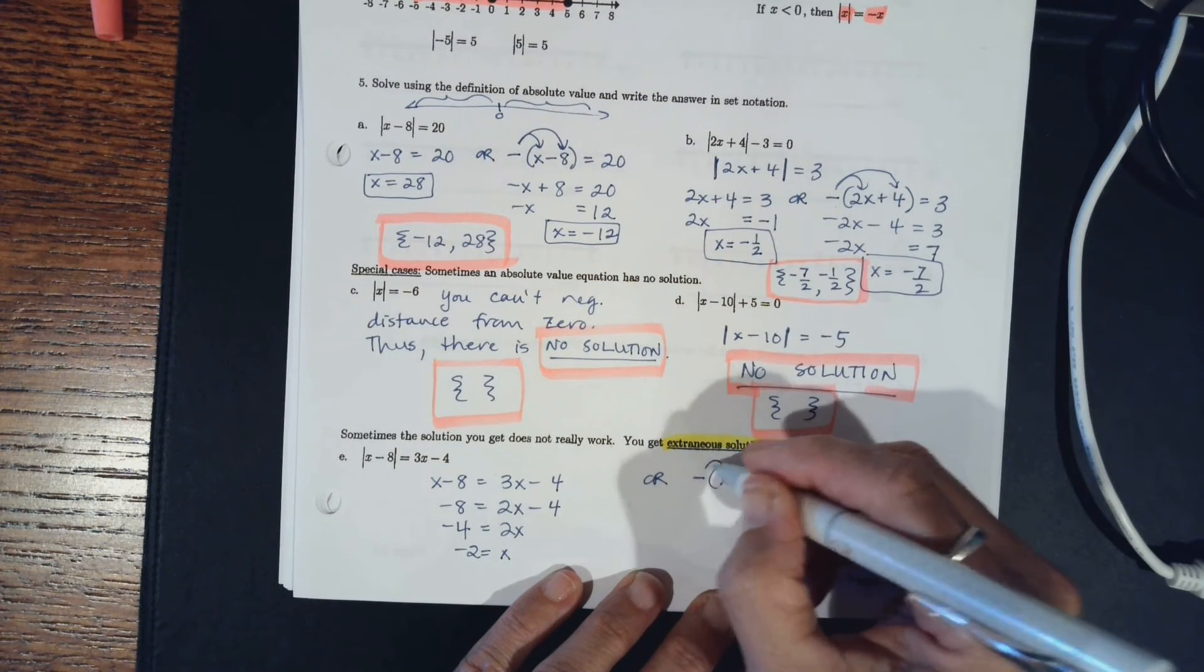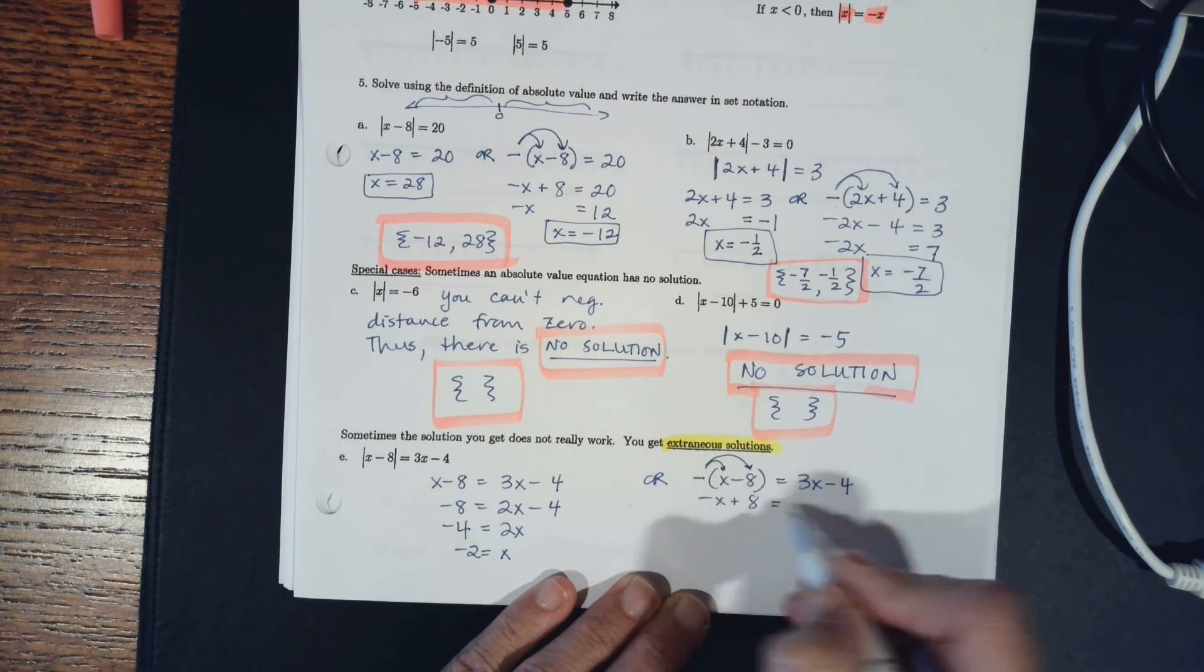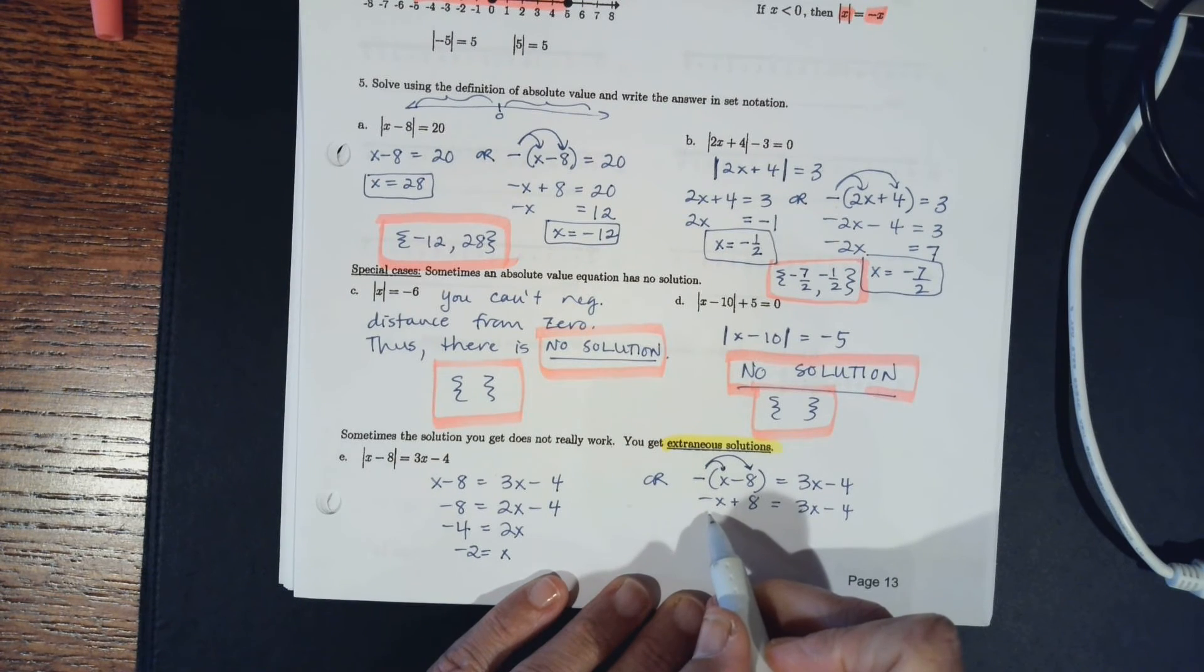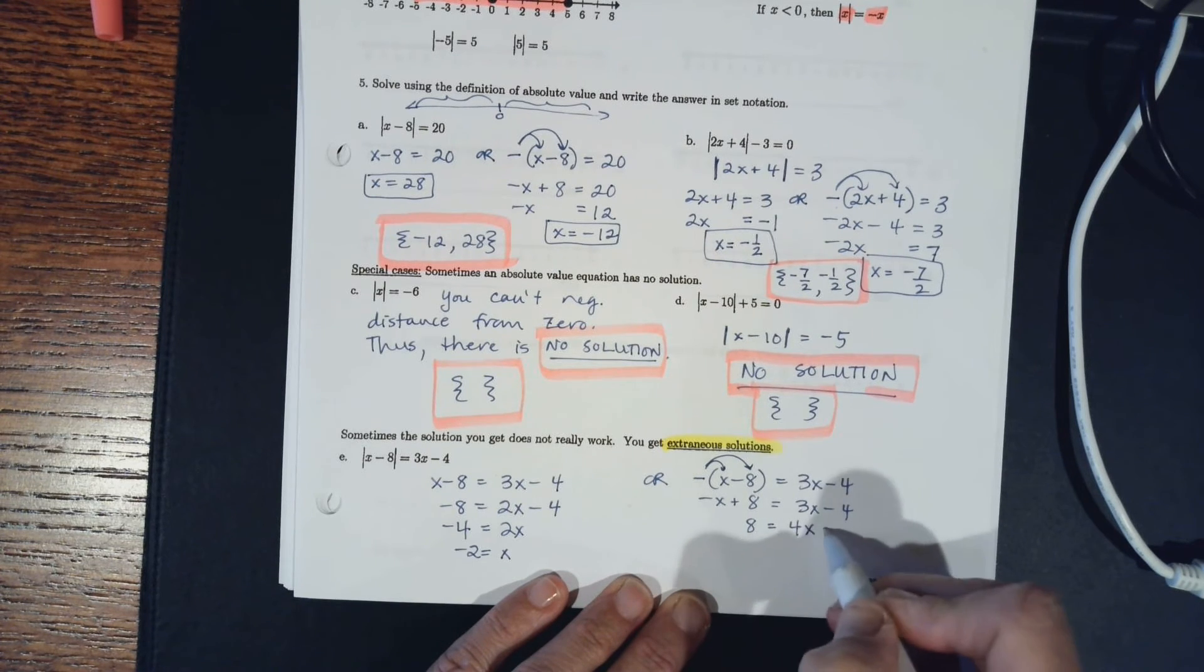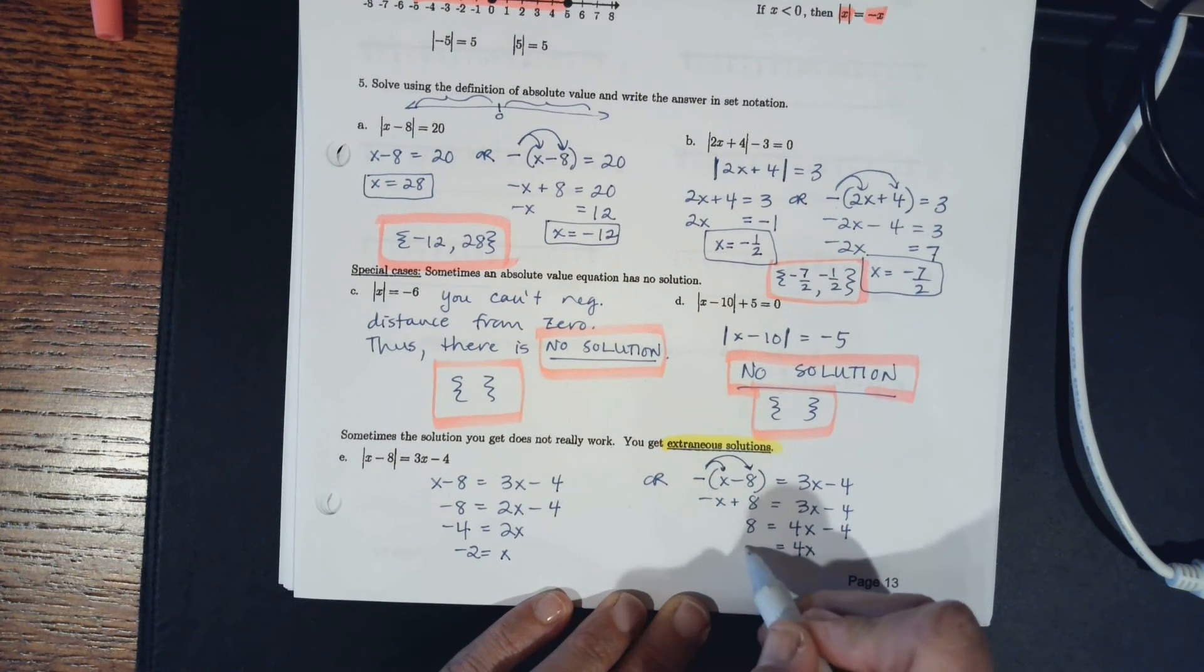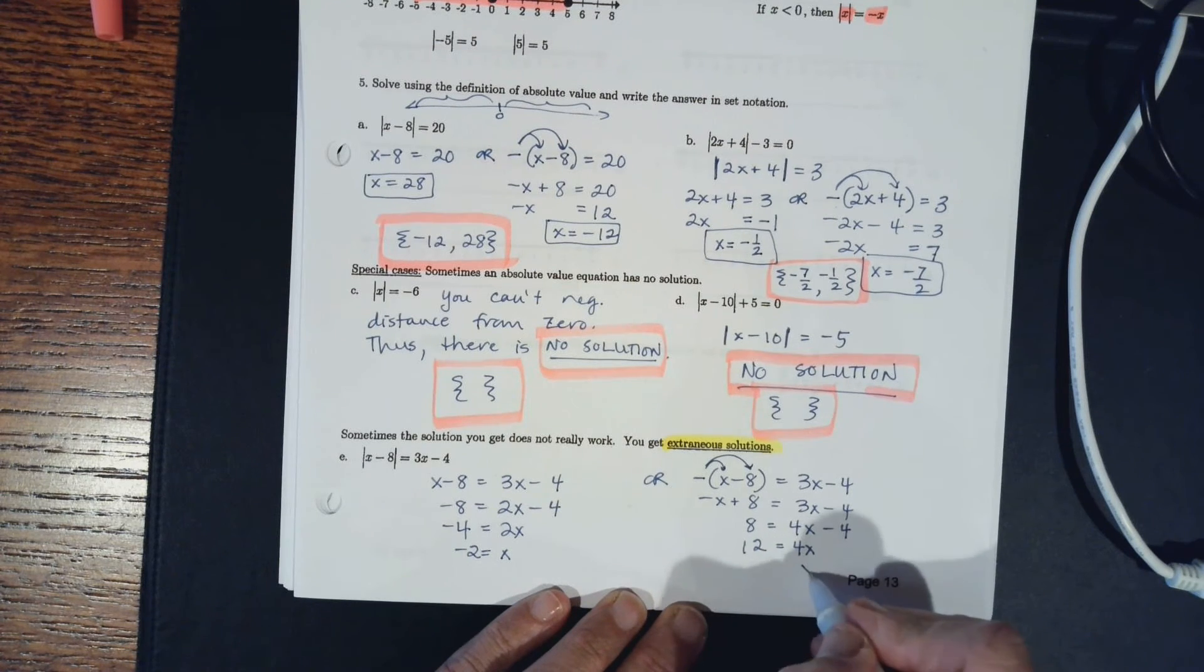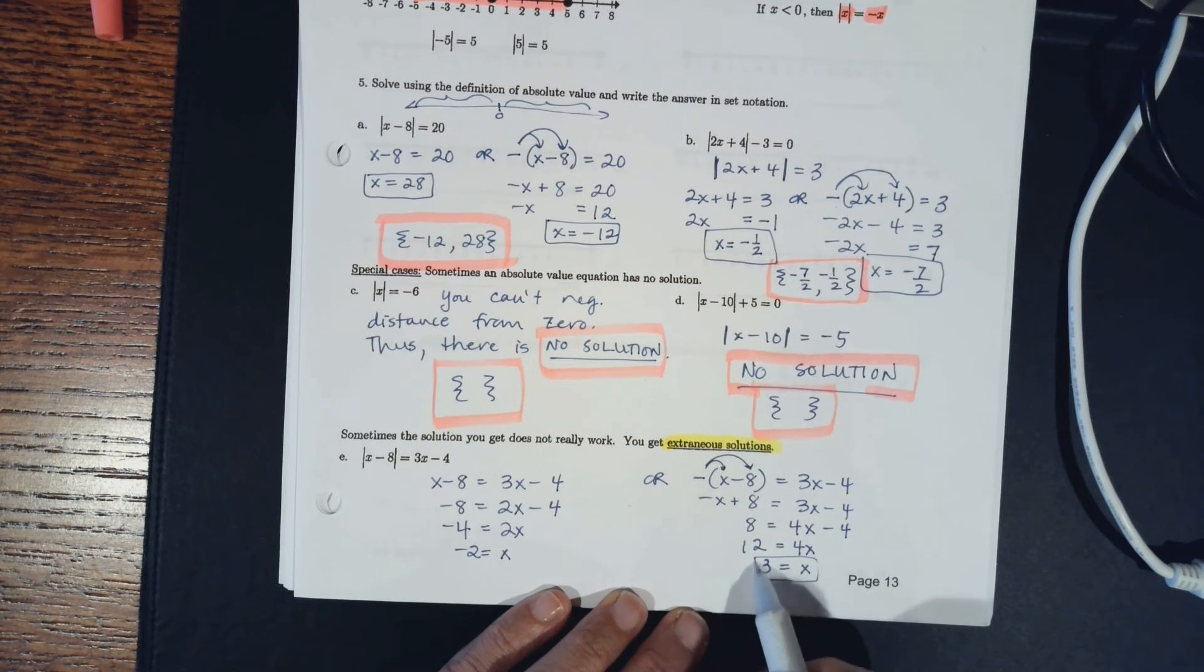And then to get x by itself, I'm going to add 4 to both sides, so negative 8 plus 4, and then I want to undo that multiplication so I divide by 2 and I get x equals negative 2. Over here, first step, distribute my negative. And I'm going to add x to both sides, and I'm going to add 4 to both sides. And finally undo that multiplication by dividing both sides by 4. So I got two answers.